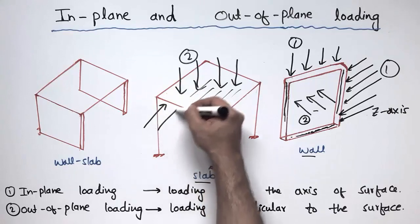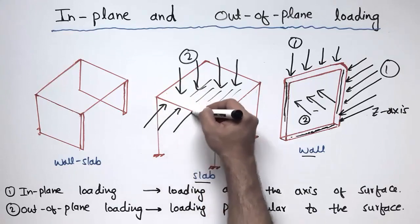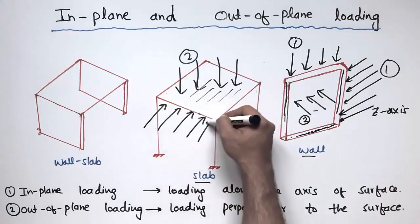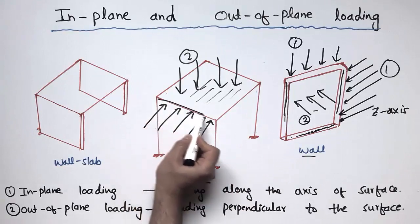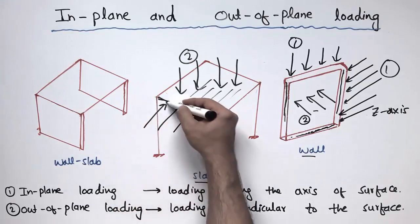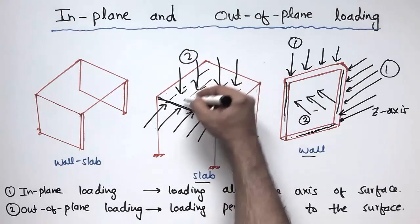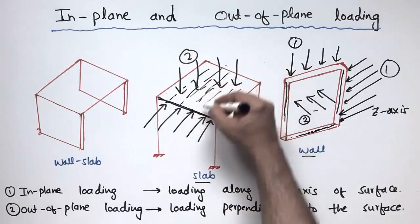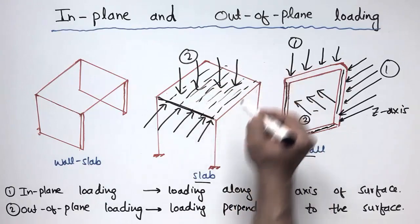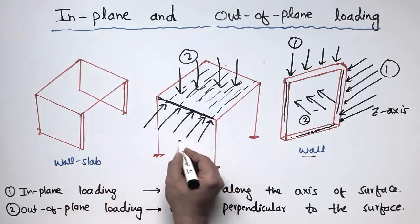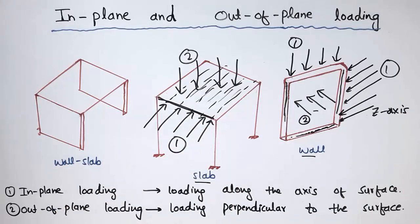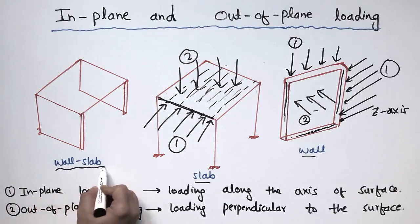When the load is acting along the axis of the slab — which may be the wind load — this load is along the axis of the slab, so we call this type of loading in-plane loading.